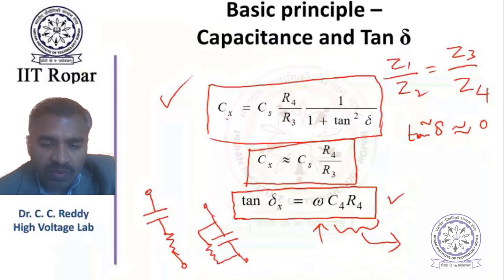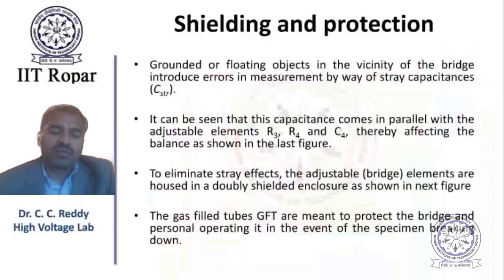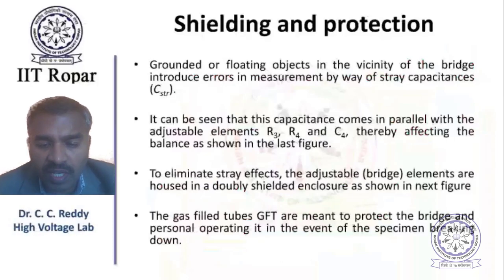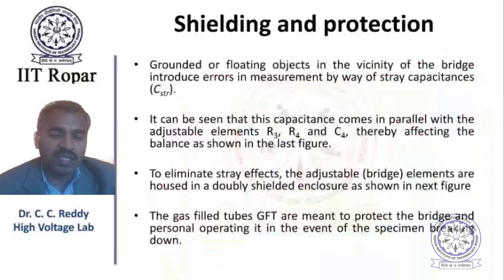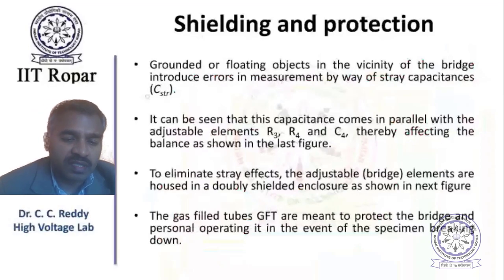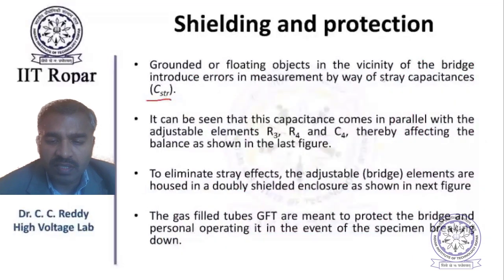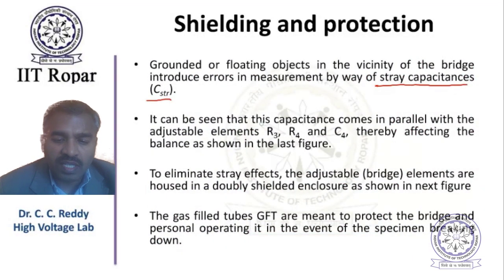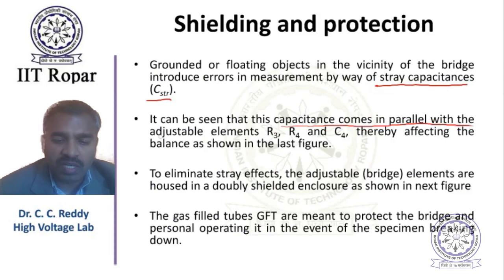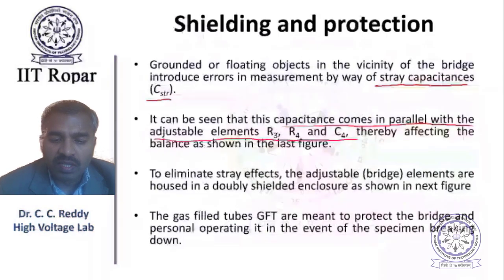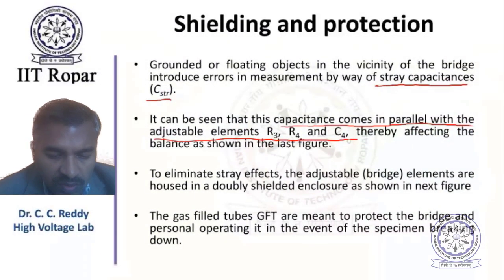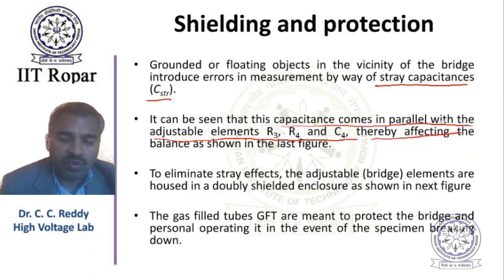There are issues with shielding and protection. Grounded or floating objects in the vicinity of the bridge introduce errors in measurement by way of stray capacitances. It can be seen that these stray capacitances come in parallel with the adjustable elements R3, R4, and C4, which are in the low voltage arm, thereby affecting the balance.